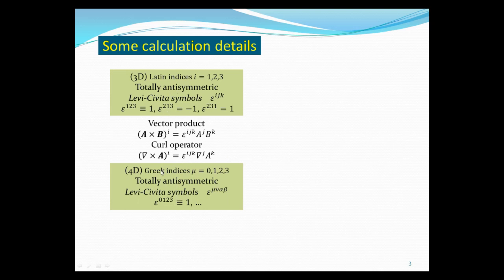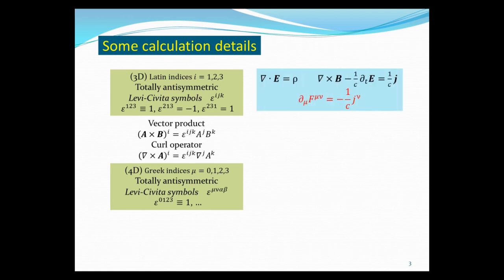For four-dimensional space-time the indices run from 0 to 3, and the four-dimensional Levi-Civita symbol has four indices. Set epsilon_0123 = 1; any odd permutation gives a minus sign. If any two indices are the same, the symbol is zero because interchanging them gives minus itself. For example, epsilon_2213 must be zero. Let's check that Gauss's law and Ampere's law are indeed contained in the single equation ∂_μ F^μν = J^ν, where the free index ν takes values 0, 1, 2, 3.